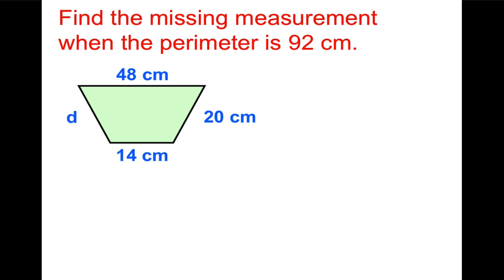Find the missing measurement when the perimeter is 92 cm. Why don't you pause the video and try and solve for d, and then check back and see how you did.